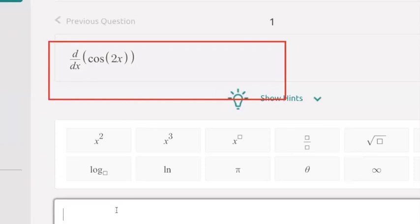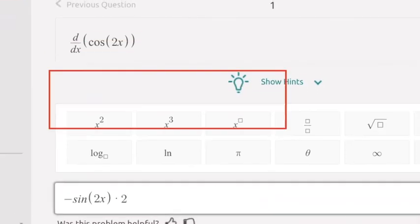And you can say, all right, I'm looking at the derivative of cosine of 2x. What should the answer be here? Negative sine of 2x times 2. And then I can verify it.